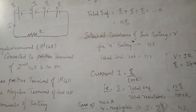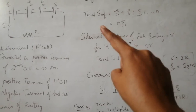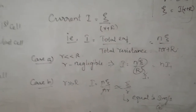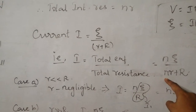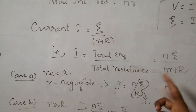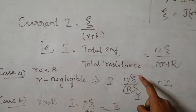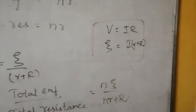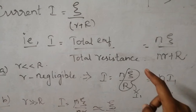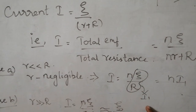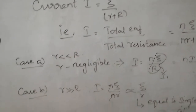For a series connection you need to find the current, voltage, and resistance. There are two possible cases. Case A: if the internal resistance of each battery is very small, then N·r is negligible and the equation becomes I = N·ψ / R. Since for a single cell I₁ = ψ / R, connecting N batteries gives I = N·I₁.